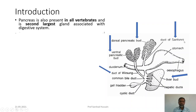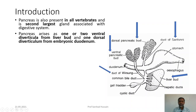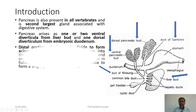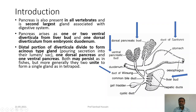Pancreas arises as one or two lateral diverticula from the liver bud — you can see it here — and another diverticula may come directly from the duodenum. The distal portion of the diverticula divides to form the glandular structure which is called the pancreatic gland or the pancreas.